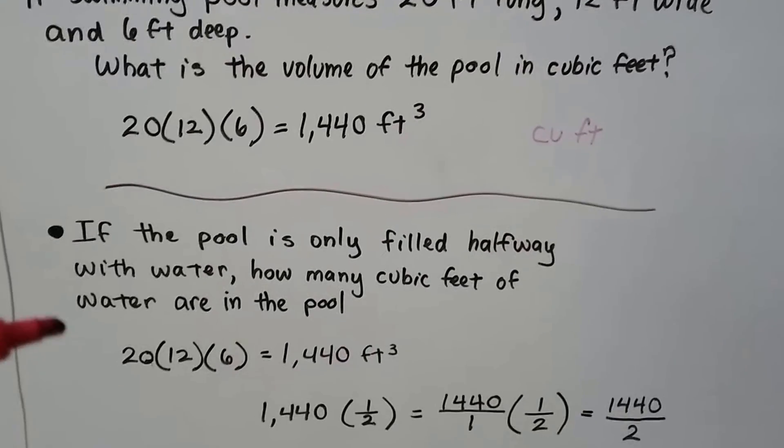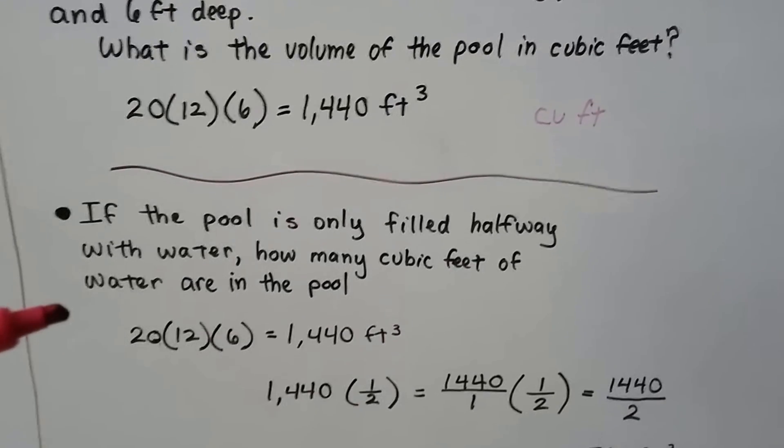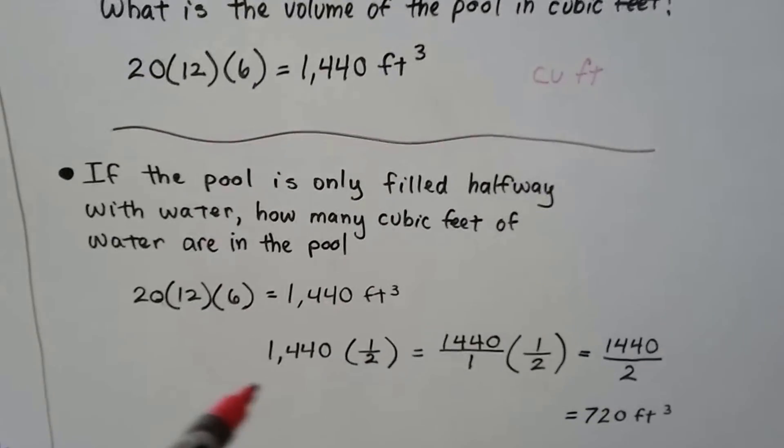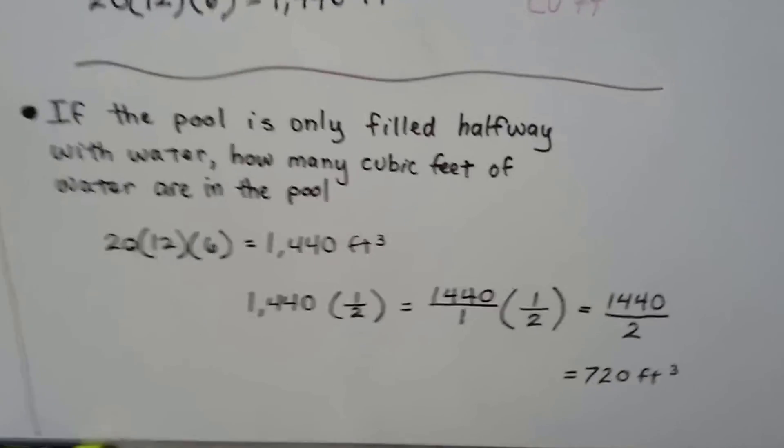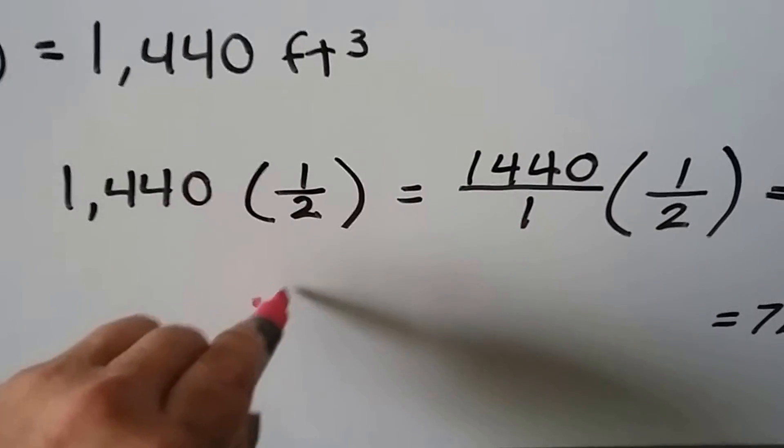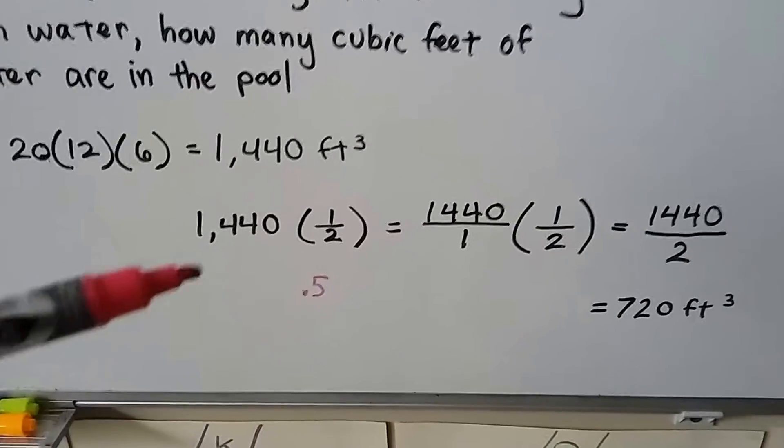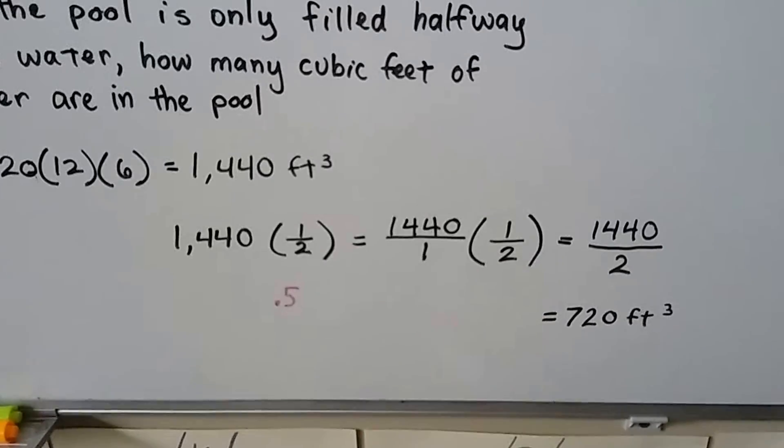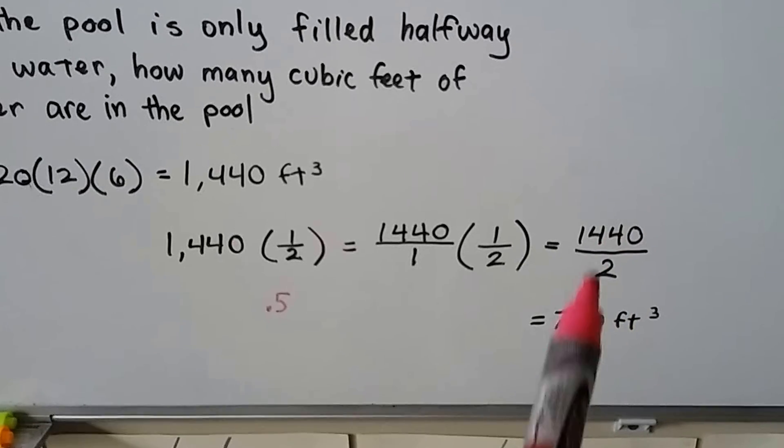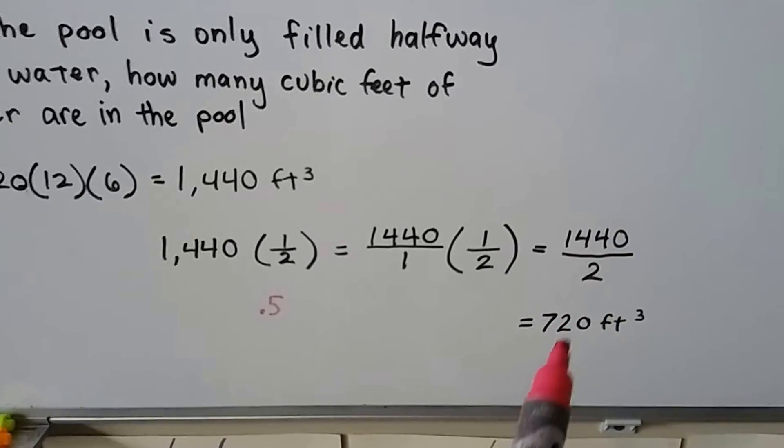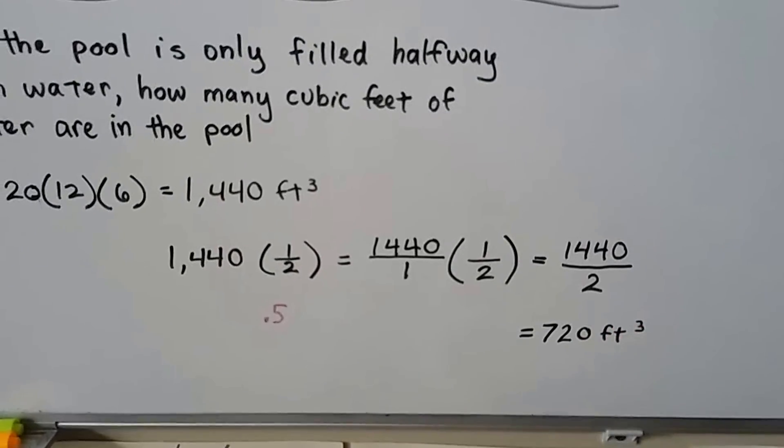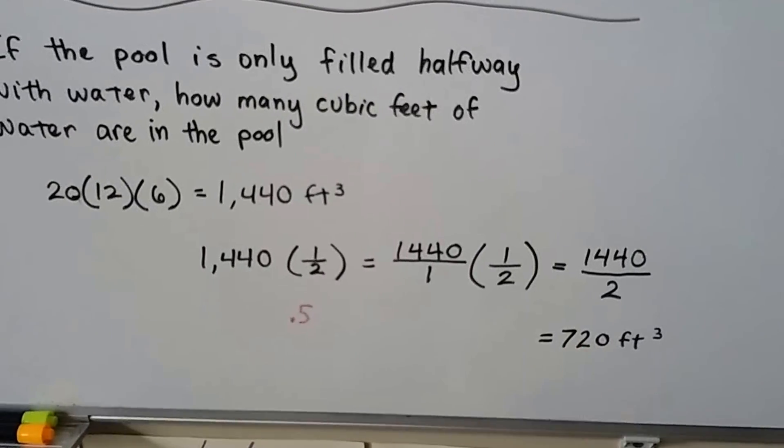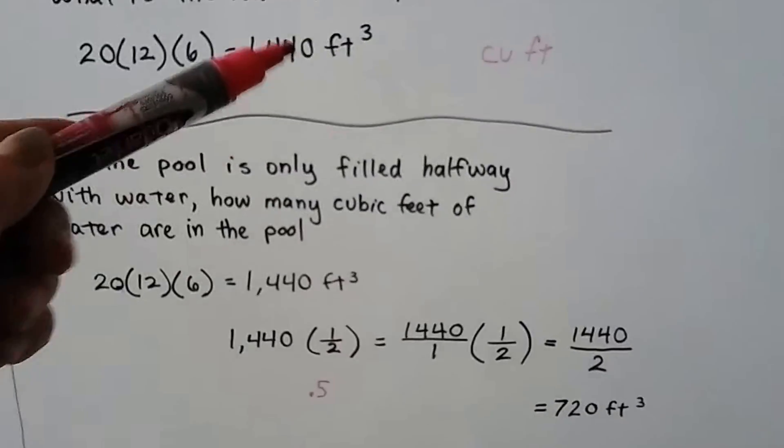Now if this same pool is only filled halfway with water, how many cubic feet of water are in the pool? We solve it the same way that we did up here. We just cut the answer in half. We can multiply it by a half or we can multiply it by 0.5. As a fraction on paper, we can just write this over a 1 and then multiply straight across. We just divide 1,440 by 2 and get 720 feet cubed. So we know if the pool is filled only halfway, it's only got 720 feet cubed. It's half of that answer.